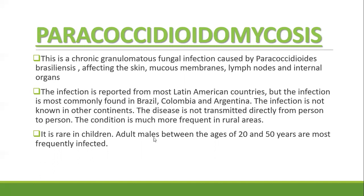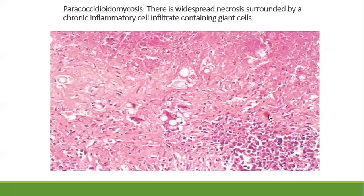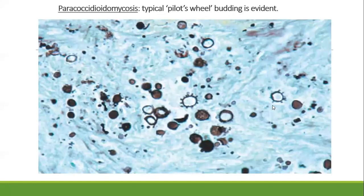It is thought the fungus occurs as a saprophyte on vegetation or in soil, and infection is likely gained by inhalation via the respiratory tract. Susceptibility to Paracoccidioides brasiliensis is related to HLA-A9 antigen, which has been found more frequently in progressive pulmonary forms of the disease. The histopathology is characterized by widespread necrosis surrounded by chronic inflammation, granulomas, and giant cells. The yeast appears as a 'pilot wheel' — large spherical structures with pilot wheel-type multiple peripheral budding.